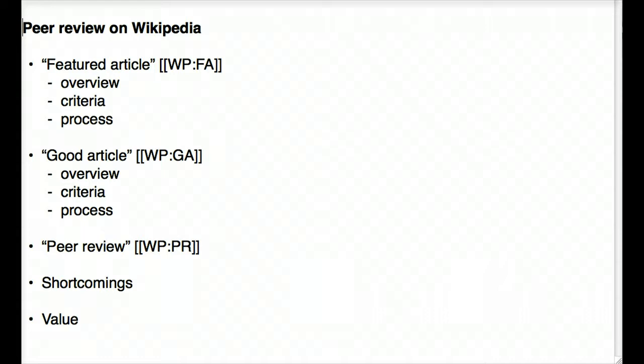A note about conventions before I get started: these double-bracketed items in the list are shortcuts you can type into the Wikipedia search bar at any time to get more information about this topic. You don't need to type the double brackets — that's just the syntax you'd use if encoding it into a Wikipedia page. If you type WP:FA at the top of any Wikipedia screen, you will come to the page about featured articles.